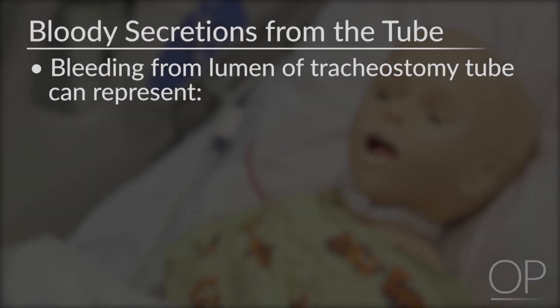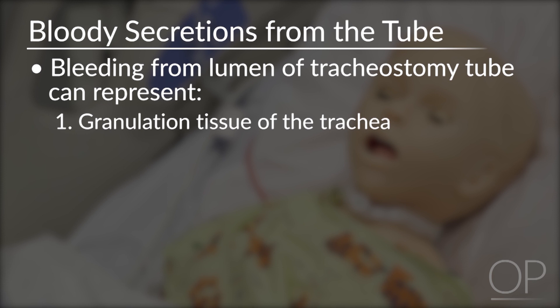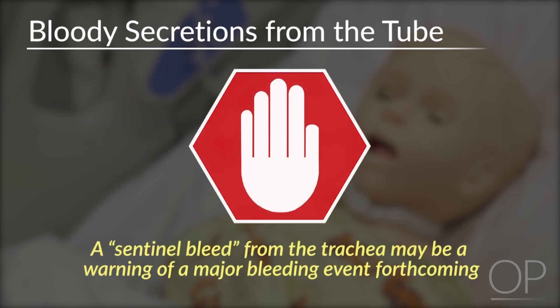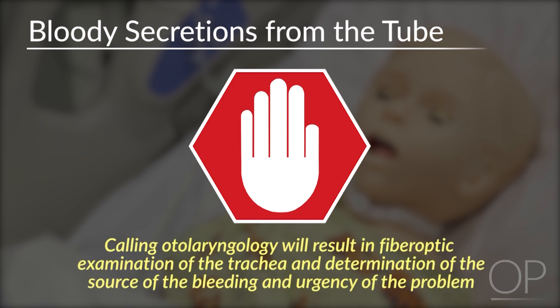Point of clarification: bleeding from the lumen of the tracheostomy tube can represent the following — granulation tissue of the trachea, possibly from tracheal infection, inflammation, or overzealous suctioning, or erosion of the tracheostomy tube into a great vessel such as the innominate artery. In this case, a sentinel bleed from the trachea may be a warning of a major bleeding event forthcoming. Calling otolaryngology will result in fiberoptic examination of the trachea, determination of the source of the bleeding, and assessment of the urgency of the problem.